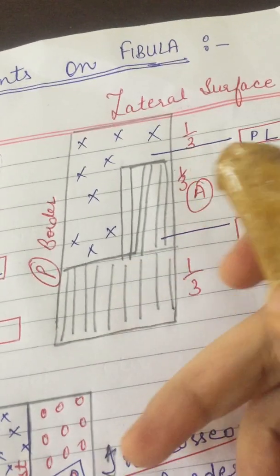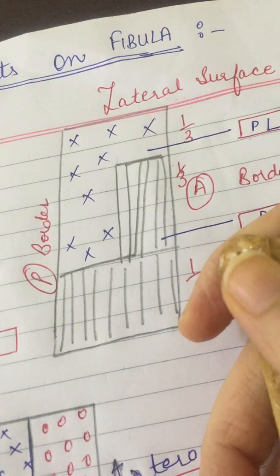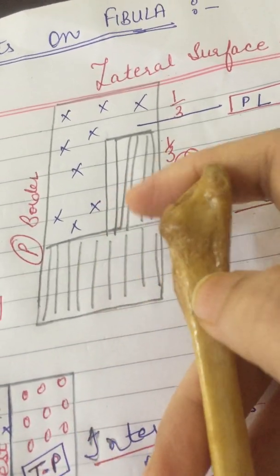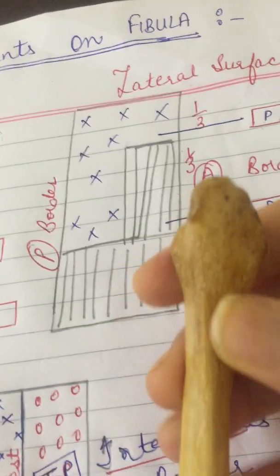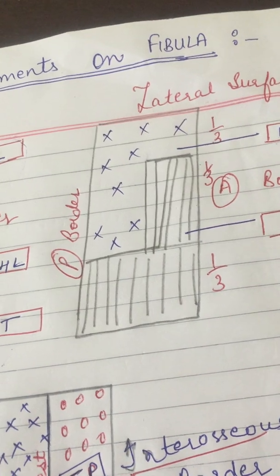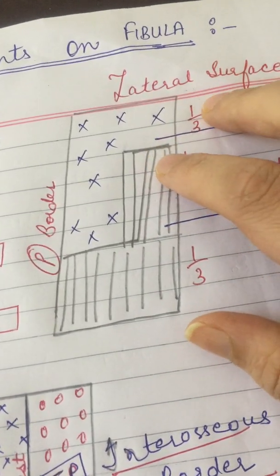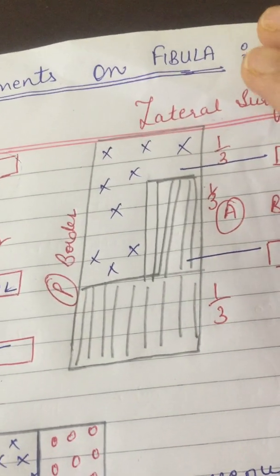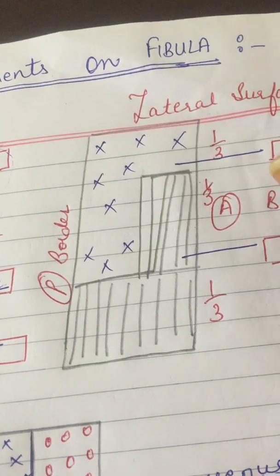The attachments to the lateral malleolus are the anterior tibiofibular ligament and the inferior transverse tibiofibular ligament. There is a groove on the posterior surface of the malleolus — this groove lodges the tendons of peroneus brevis and peroneus longus, where peroneus brevis lies deep and peroneus longus is superficial.